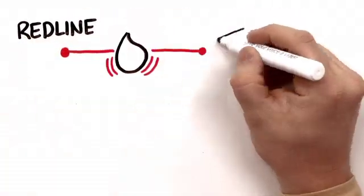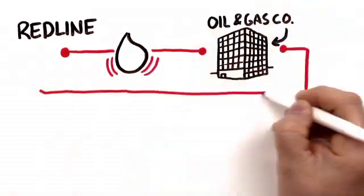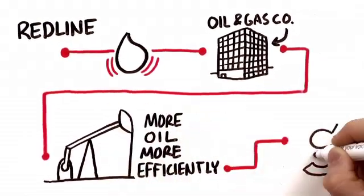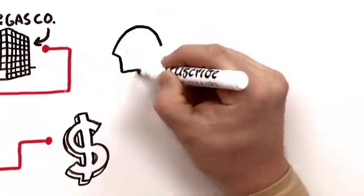Redline powers the wireless digital oil field, delivering the communications that oil and gas companies need to extract more oil more efficiently. And this translates directly into a greater return on investment for smart companies like Shell,